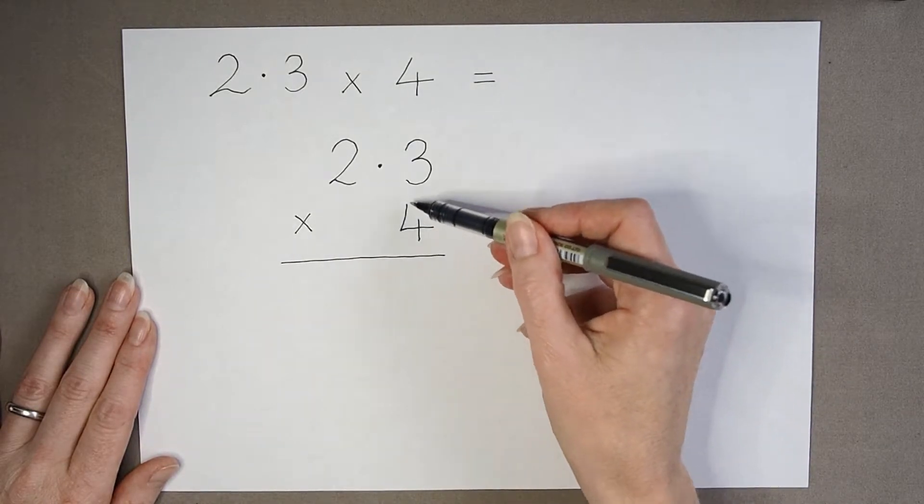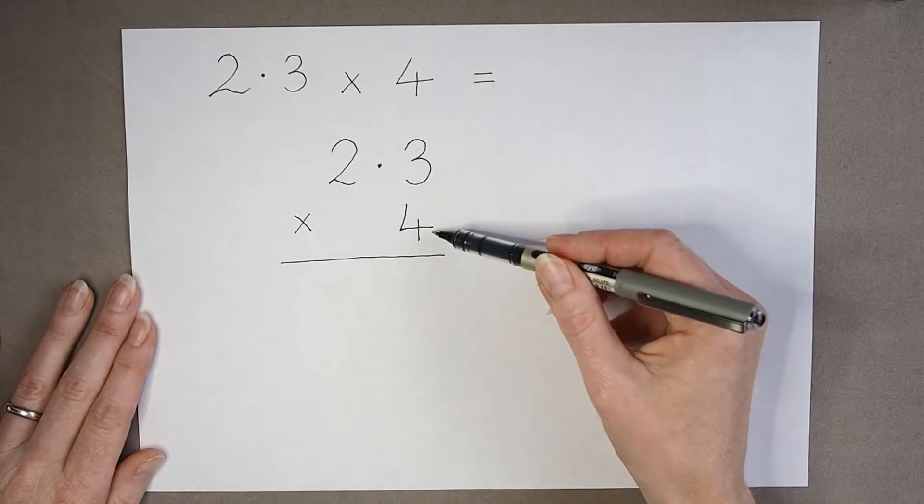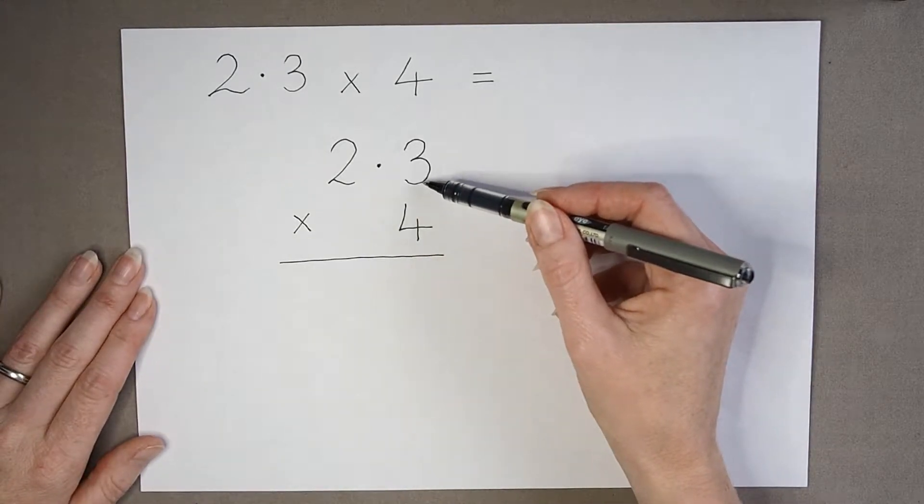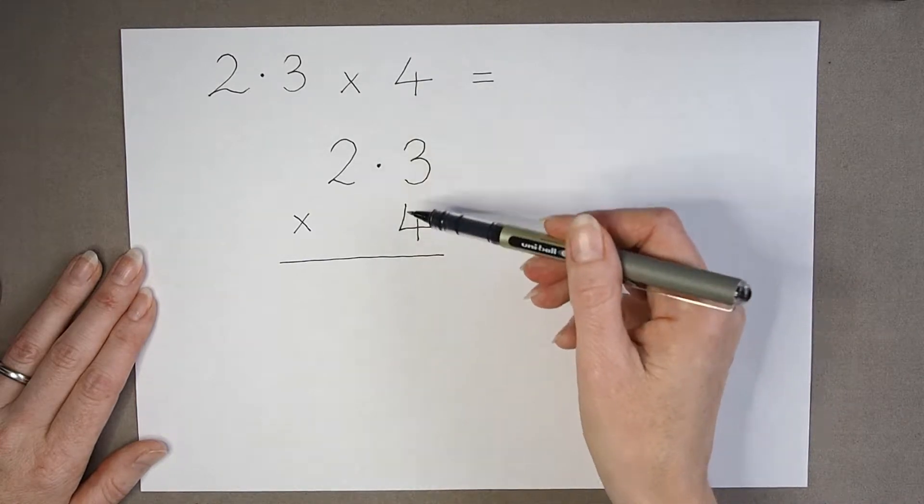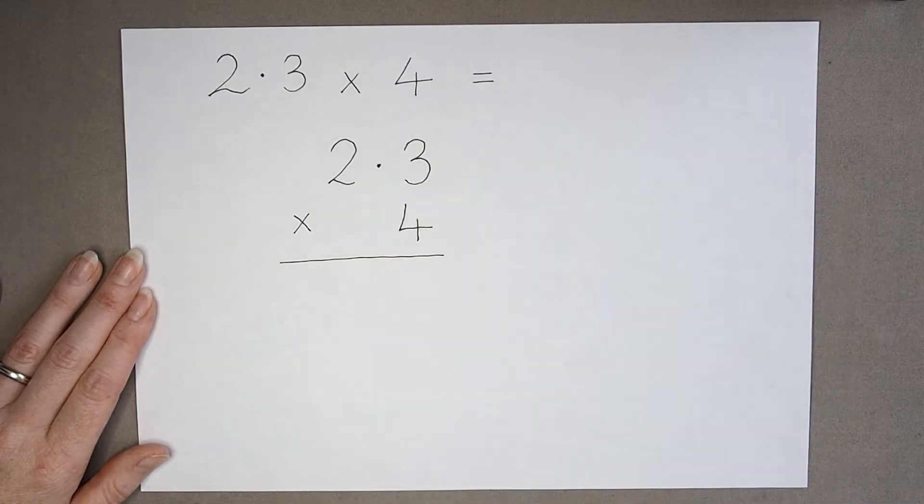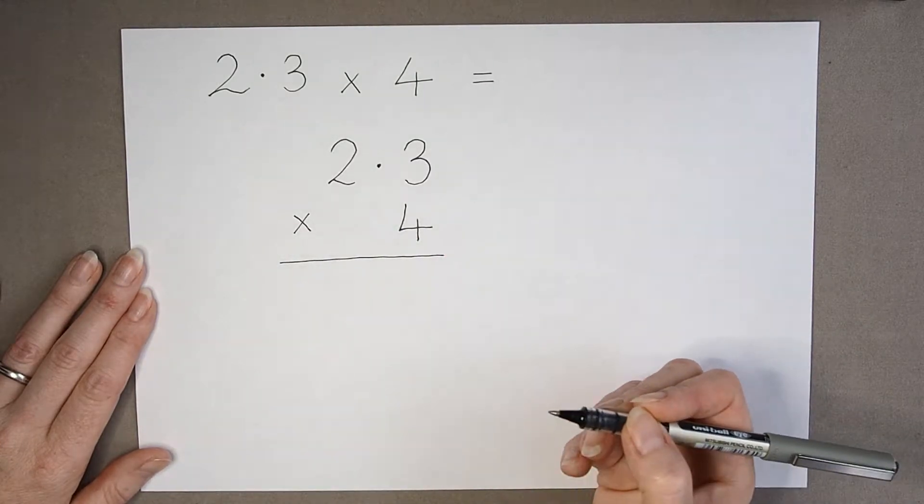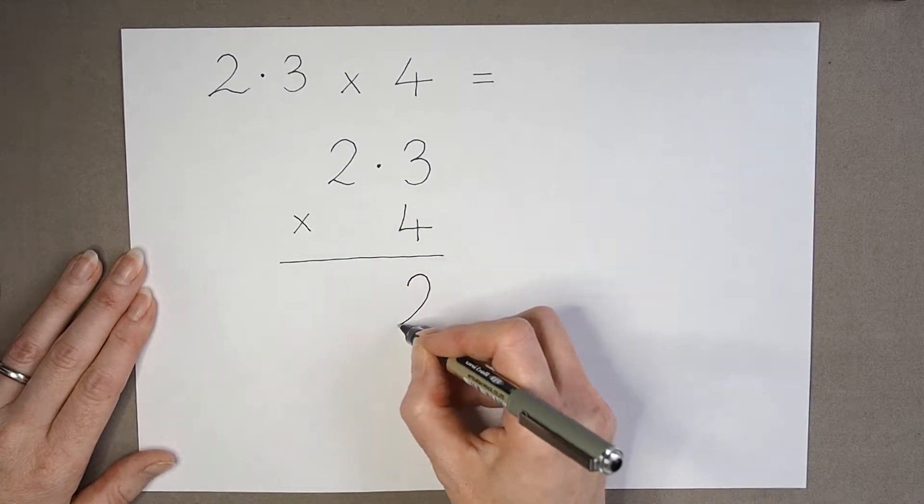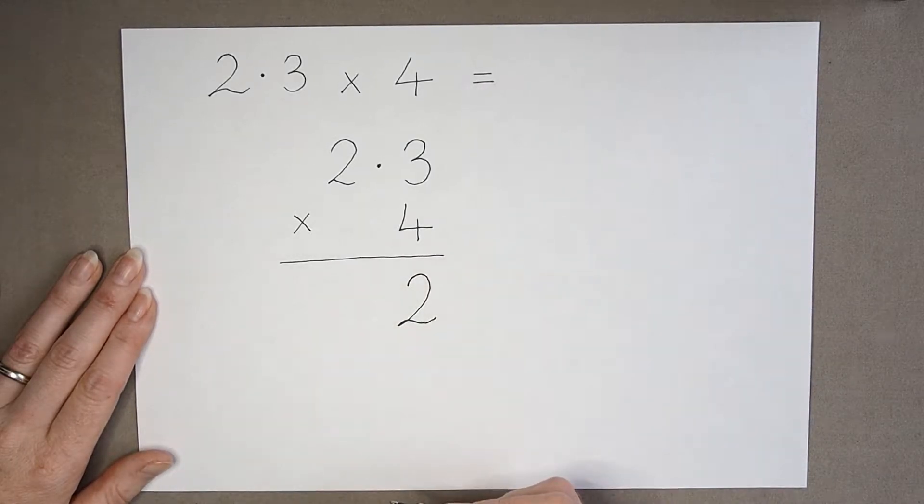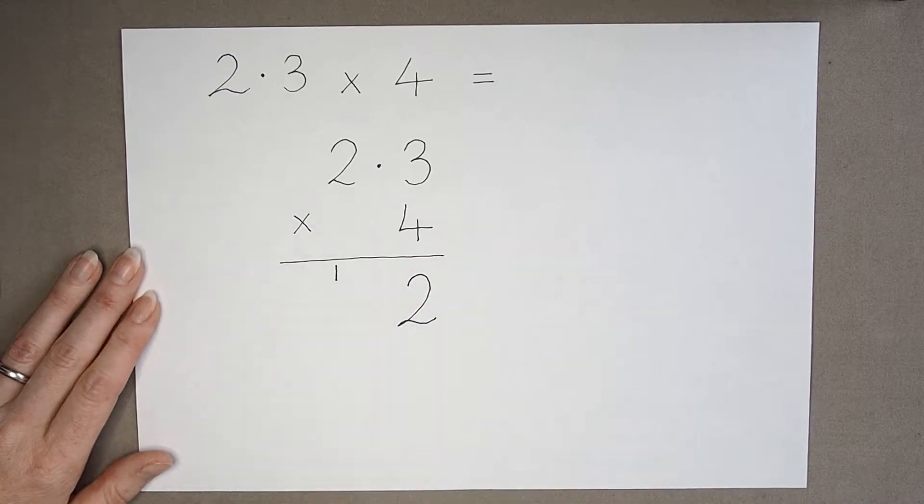So I'm multiplying by this digit, and I'm saying 4 multiplied by 3. It's in my tenths column, but I'm still saying 4 multiplied by 3. 4 multiplied by 3 is 12. So I'm going to write down the two, and I'm going to carry the one into my next column.